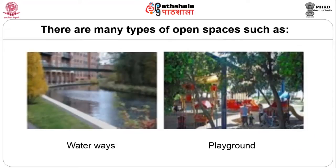Playgrounds are very important: you need to consider different age groups. For toddlers and small kids, you need a seating area for elders to watch them, rubber flooring, and safety of each and every piece of equipment. As the age group grows, you need more activity places — a cycling track, a basketball court, a volleyball court, a tennis court, a swimming pool, and lots of other play areas to take care of all requirements.